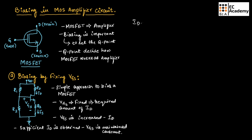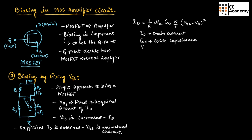The drain current ID can be given as: ID = (1/2) × μN × COX × (W/L) × (VGS − VT)². Here, ID is the drain current, COX is the oxide capacitance, VGS is the voltage between gate and source, VT is the threshold voltage, and W/L is the transistor aspect ratio, which is width divided by length.